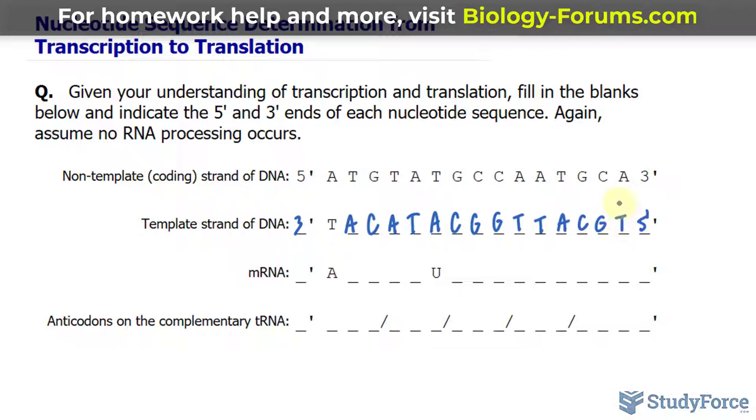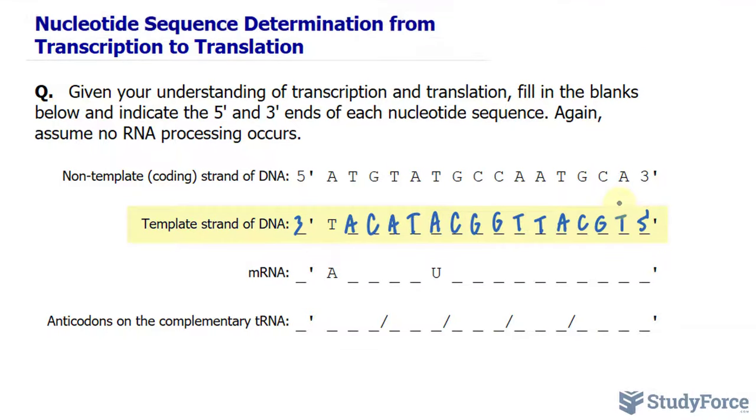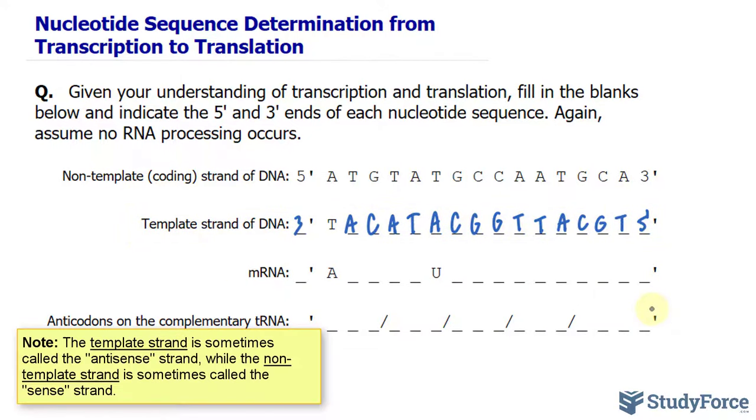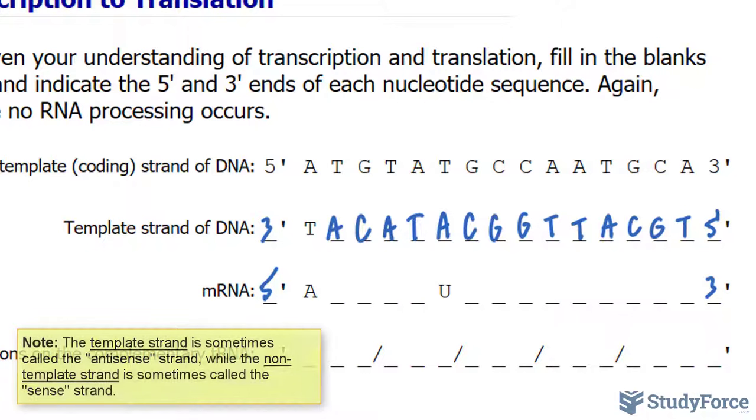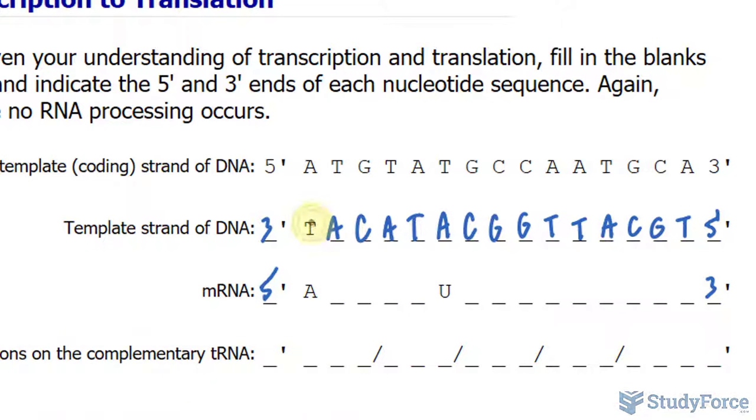Moving forward, as mentioned, the template strand is what gets transcribed into mRNA. So with that being said, the mRNA should be running anti-parallel. So this should be 5' and that should be 3'. Now they've given you a few nucleotides already. They've said that T base pairs with A. But unlike with DNA, the base pairing when it comes to mRNA is a little different.